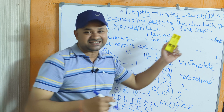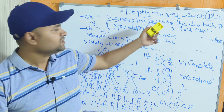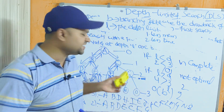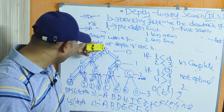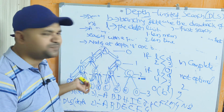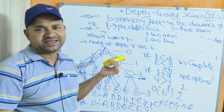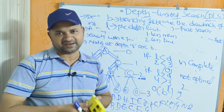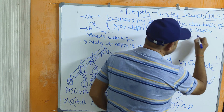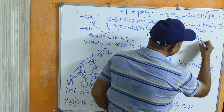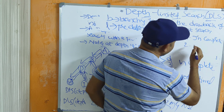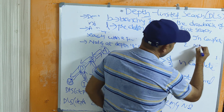The second advantage is less time: since we assume the goal node may be found along the current path, we get the output faster. The disadvantages of DLS are: first, it is incomplete, and second, it is not optimal.